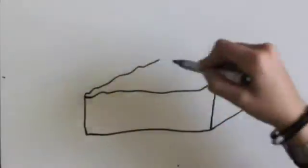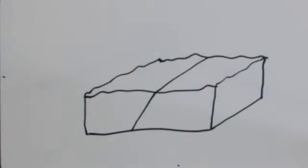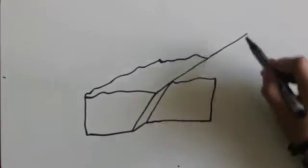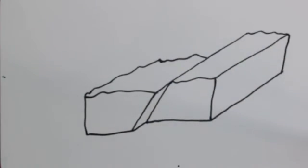In strike-slip faults, the force is applied laterally, so that one block slides forward along the strike, and the other slides backward, as you see here.